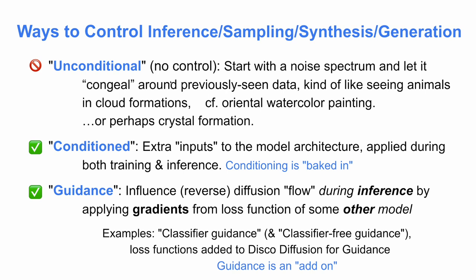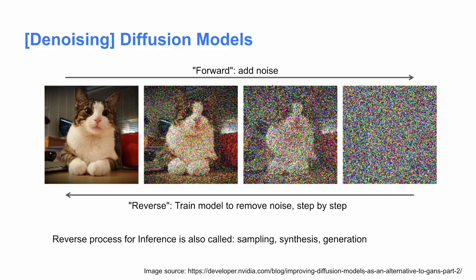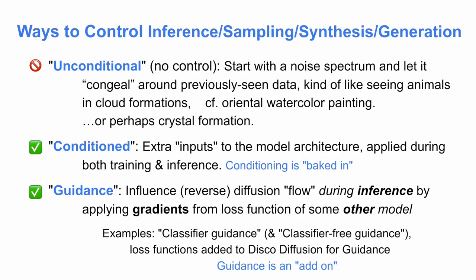So how do we control that generation? A basic way is to just not control it at all. We released a Colab notebook called Dance Diffusion that is an unconditional diffusion model — the model just goes with whatever it was trained on. There have been analogies made with seeing animals in cloud formations, or watercolor painting in China where artists look to see how the paint flows before determining what's there. Maybe crystal formation — they form particular things as they want to go. You can't really shape it too much.